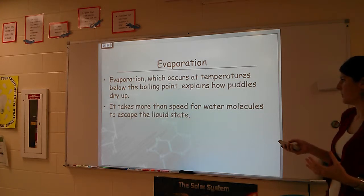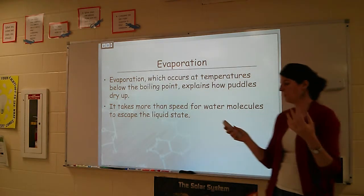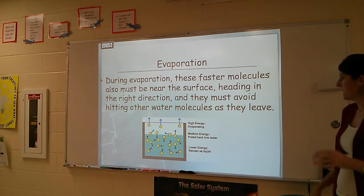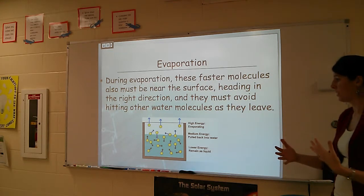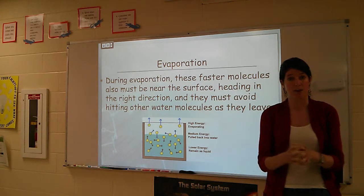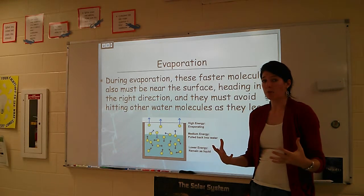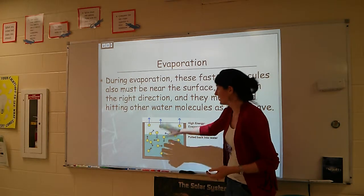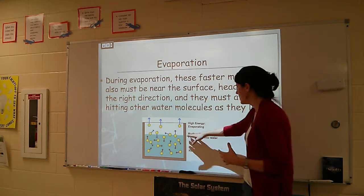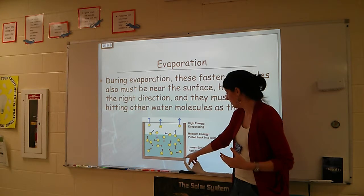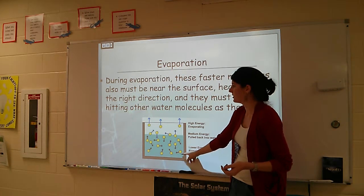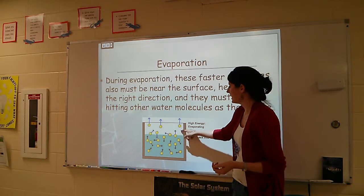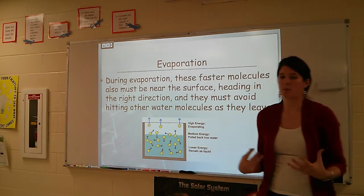It takes more than speed for water molecules to escape the liquid state. During evaporation, the faster molecules must also be near the surface, heading in the right direction, and they must avoid hitting other water molecules. So there's a lot to it other than just absorbing kinetic energy and moving fast. Here we have a picture showing that in a puddle, the molecules at the bottom remain in the liquid — they're not moving fast enough, not near the surface, not going in the right direction. As we get closer to the surface, they're going in the right direction and might be fast enough to escape, so vaporization could occur.